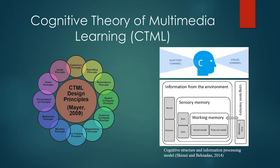First, we will look into the learning theories for the study. The Cognitive Theory of Multimedia Learning, or CTML, is a simple interpretation of how humans process information. There are three different sections where different types of memory are involved.